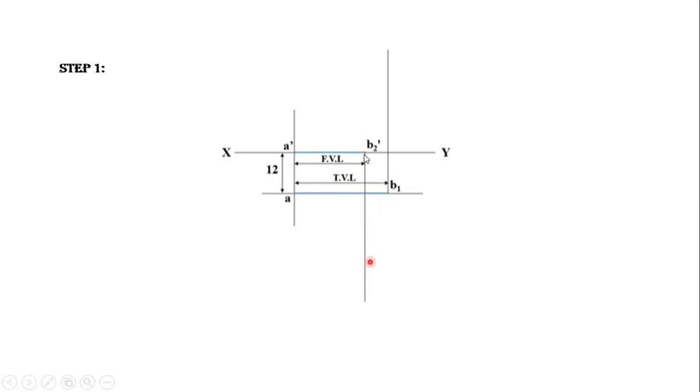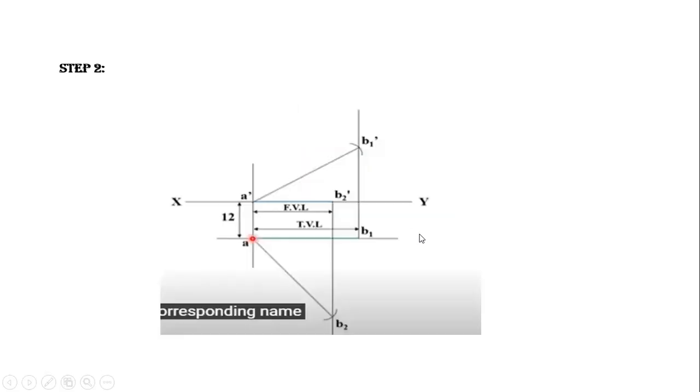From B2 dash, draw a vertical projection line. Similarly, from B1, draw vertical projection line towards upward direction as shown in the figure. The next step: mark true length 75 mm. Take compass, measure 75 mm with the help of the scale.